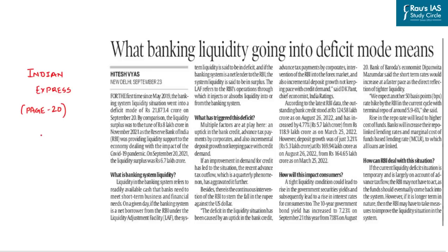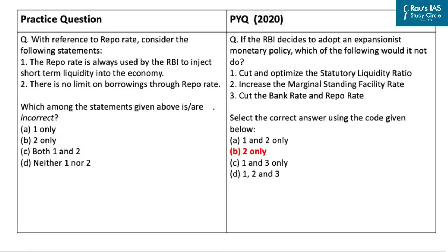The next article talks about the bank liquidity situation in India, which has for the first time gone into deficit mode since 2019. UPSC under the economic section has consistently asked questions related to banking. The practice question says: with reference to the repo rate, consider the following statements. The first statement is that the repo rate is always used by the RBI to inject short-term liquidity into the economy.